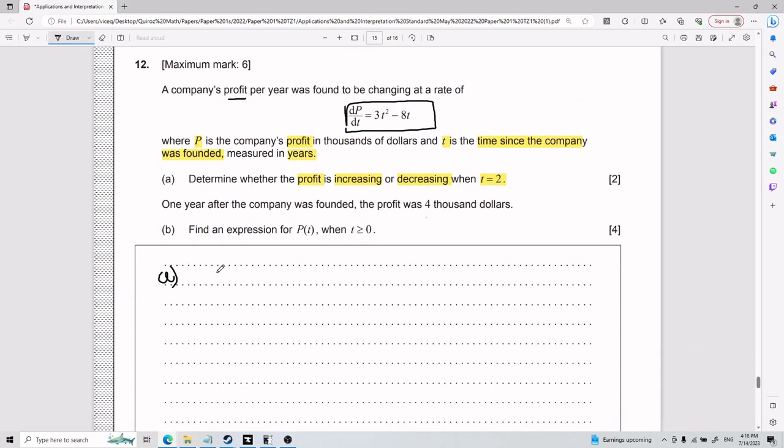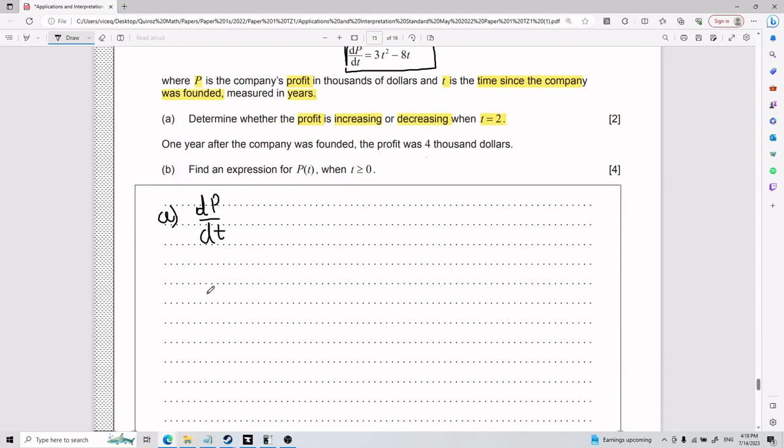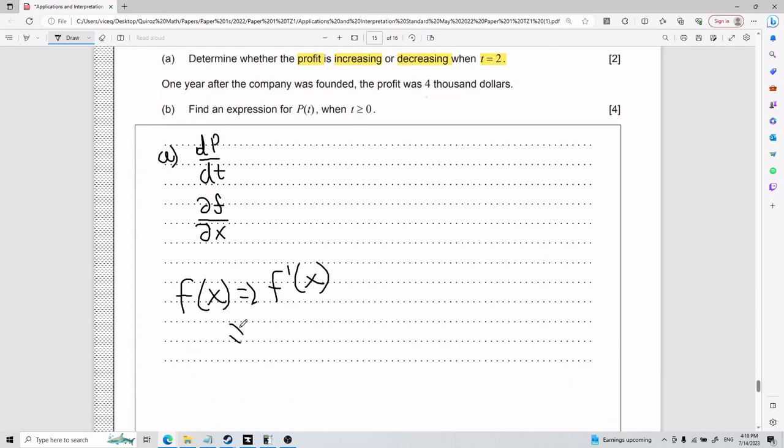So first things first, when you have dP/dt, or you might encounter stuff like the derivative of f, derivative of x, might be written with that fancy symbol. This is all rate of change.